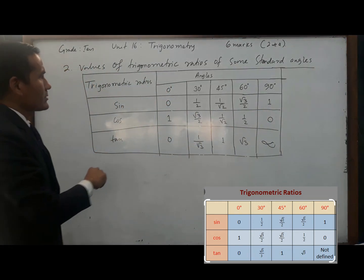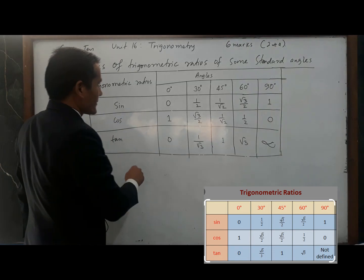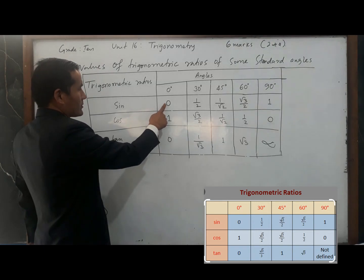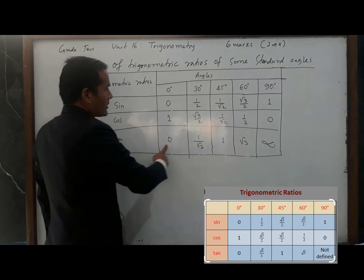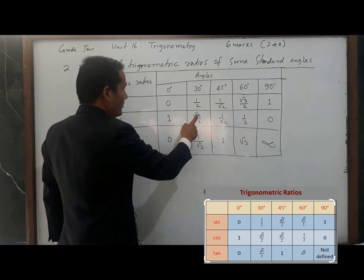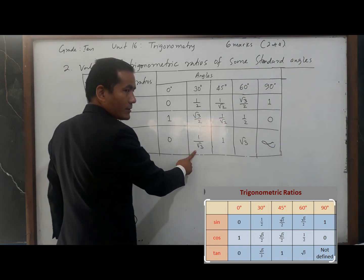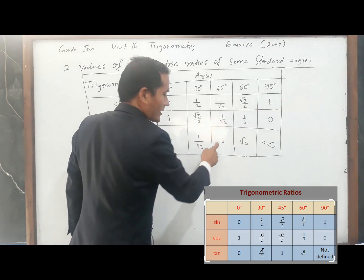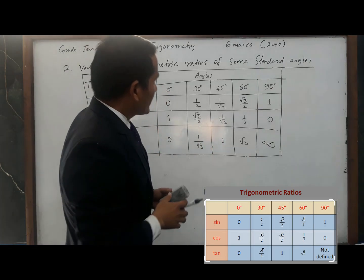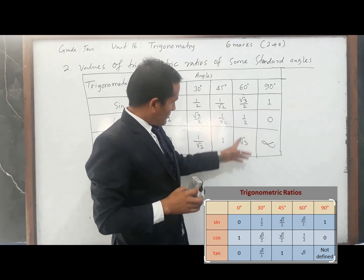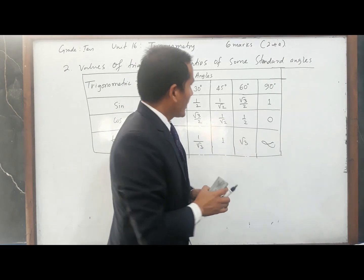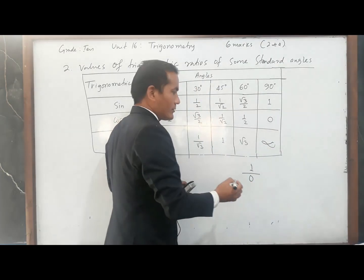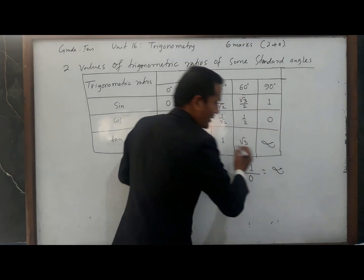We know that sine by cos is tan. So if you divide 0 by 1, you get 0. 1 by 2 divided by root 3 by 2 gives 1 by root 3. 1 by root 2 divided by 1 by root 2 gives 1. Root 3 by 2 divided by 1 by 2 is root 3. And always remember, if you divide 1 by 0, it is always infinity, undefined.